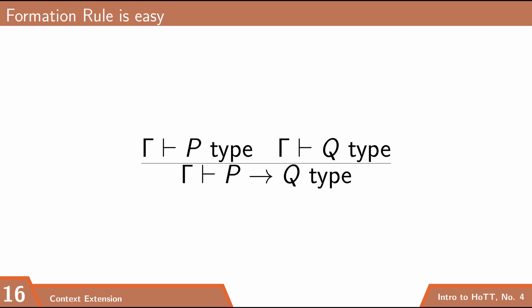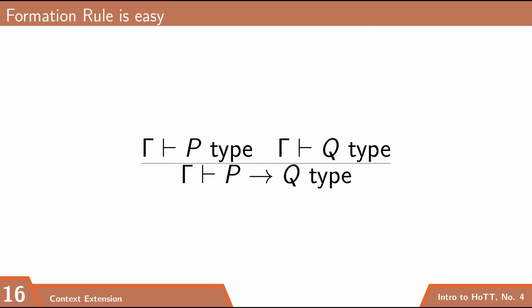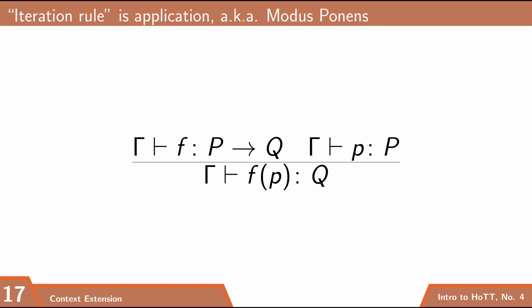The formation rule is pretty simple: if P is a type and Q is a type, then P arrow Q is a type. Note that I'm not just introducing one new type here — I'm introducing infinitely many new types, because I can combine any two types I already have using this arrow. I'll be writing the contexts gamma throughout because those are going to be relevant.